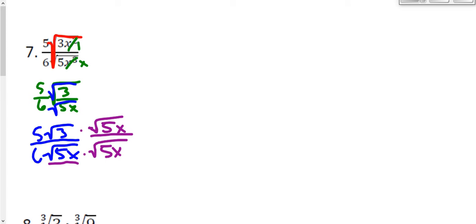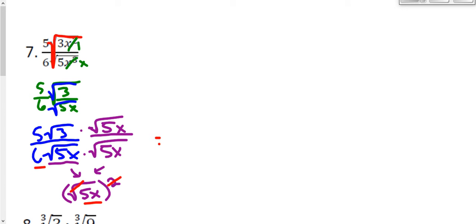When we do this, the denominator will no longer have a radical. What happens in the denominator is the square root of 5x times itself is being squared, which means the square and the square root cancel, and 5x is the only thing left — along with the 6 from before. So we have 6 times 5x outside of the radical. We just multiplied the square root by itself, the square root cancels, and 5x is now free of the radical.